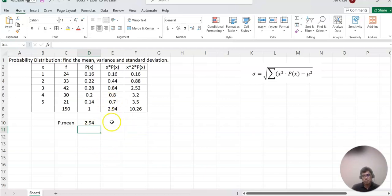But now this time, total probability value becomes 1. So 2.94 divided by 1 equals 2.94.